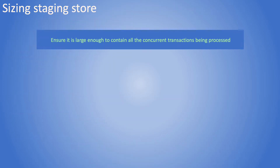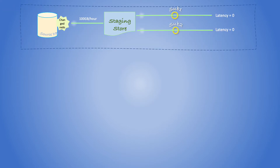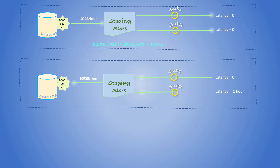Let's look at how to set an appropriate size for the staging store. These illustrations use 100 GB as a velocity of data generation. Latency is the time difference between an operation being committed on the target database against the time it was committed on the source.